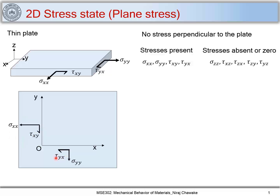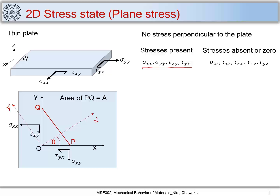Now I am interested in finding the state of stress on a plane inclined to x and y. Let us call this plane PQ, and I mark the coordinate axes for this PQ plane as x' and y'. I want to find the stress state when I change the coordinate axes from x-y to x'-y'. Let the angle between them be θ and let the area of plane PQ be A. The problem is: I have stresses known in the x-y coordinate system, and I want to find them in the rotated system.